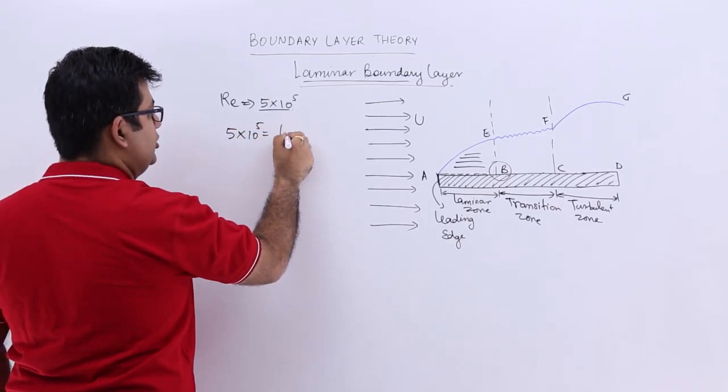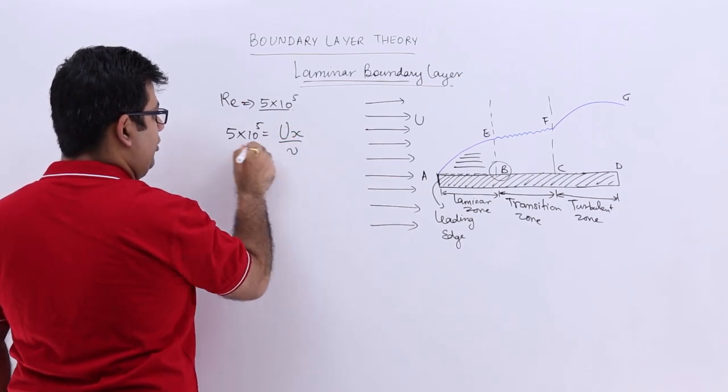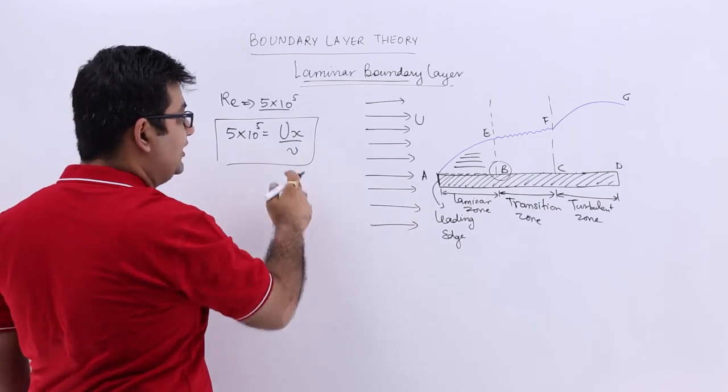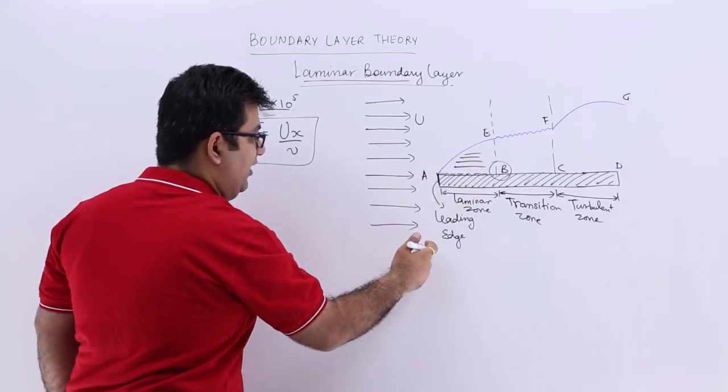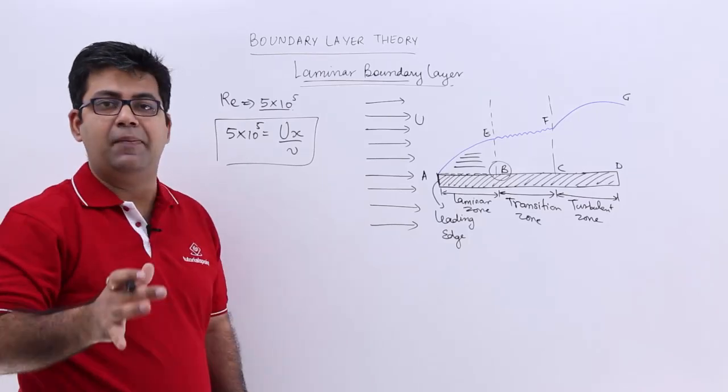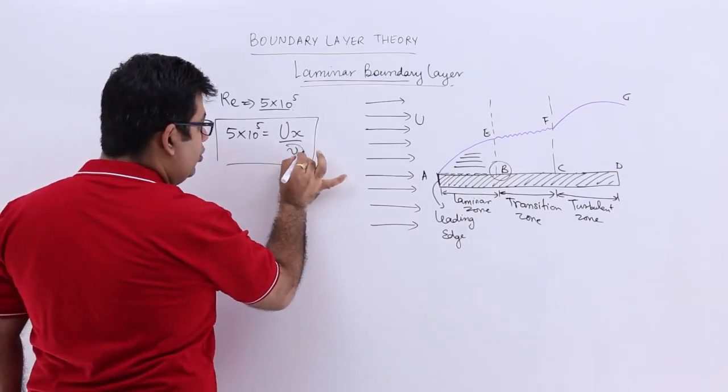The Reynolds number is u into x upon nu, where u is the free stream velocity, x is the distance away from the leading edge up till which your flow would remain laminar, and nu is the kinematic viscosity of the fluid.